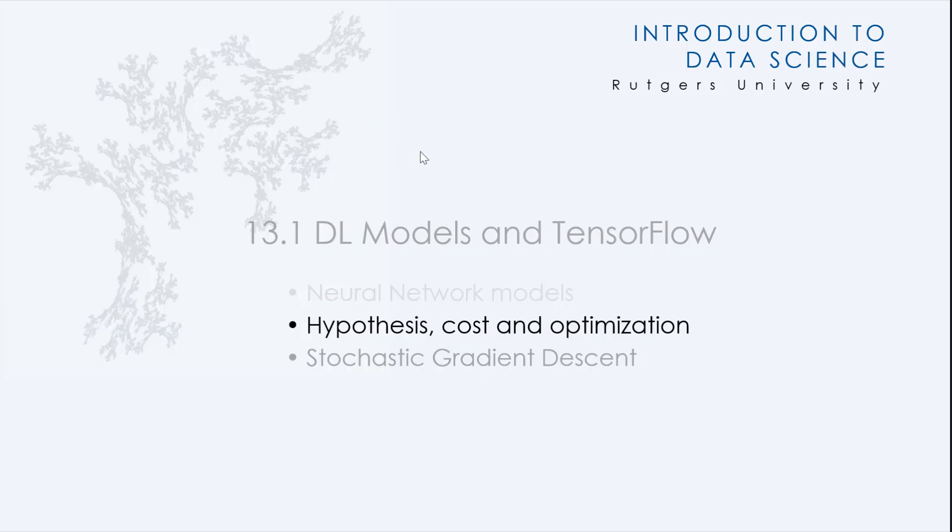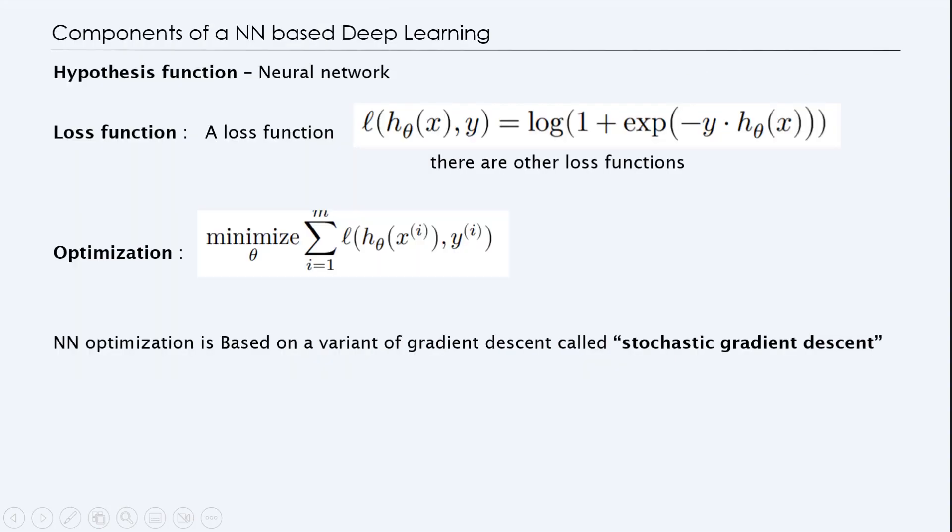So next, let's try to understand the hypothesis cost and optimization in the context of neural networks. As before, with any machine learning, we are trying to come up with a canonical form of our neural machine learning problem. So essentially, our hypothesis function would be a neural network, which is a nonlinear function, a complex function that we find.